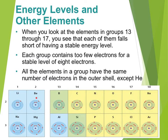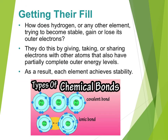Everything in the same group has the same number of outer electrons. The only difference is helium — helium only has two electrons, but that's because its outer shell can only hold two electrons. So how does hydrogen fill up its outer shell to become stable? It can gain electrons, it can lose electrons, it can do other things with electrons, and that is one of the things we will be discovering as this unit goes on.